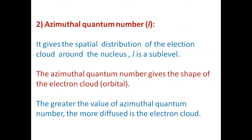The second quantum number is the azimuthal quantum number. It gives the spatial distribution of the electron cloud around the nucleus. L represents a sub-level and the azimuthal quantum number gives the shape of the electron cloud.